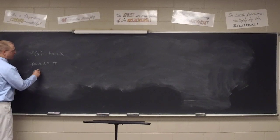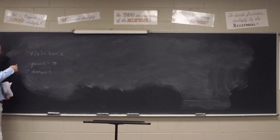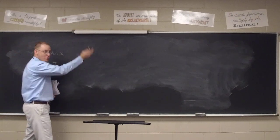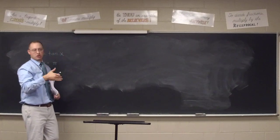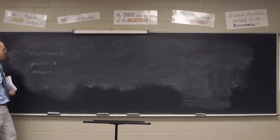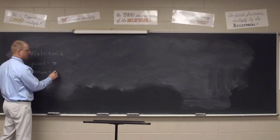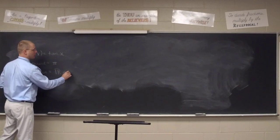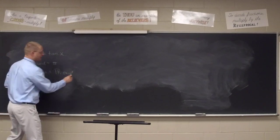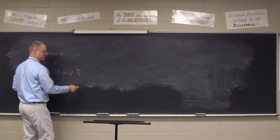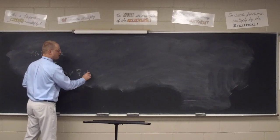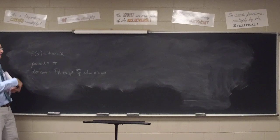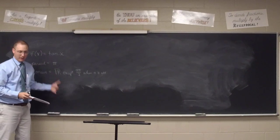We also noted that the domain of the tangent is not all real numbers like it is for sine and cosine. It does kind of keep going and going with a little whoop over and over again, but there were interruptions all along the way. The domain of tangent is all real numbers except n·π/2, when n is odd. Those odd π/2 values include π/2, 3π/2, 5π/2, 7π/2, and going backwards: -π/2, -3π/2, and so forth.